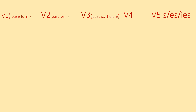V1 is the base form. V2 is the past form. V3 is the past participle of the verb. V4 is the -ing form, that is the present participle of the verb. V5: if the third person is singular, we add S, ES, or IS with the verb.